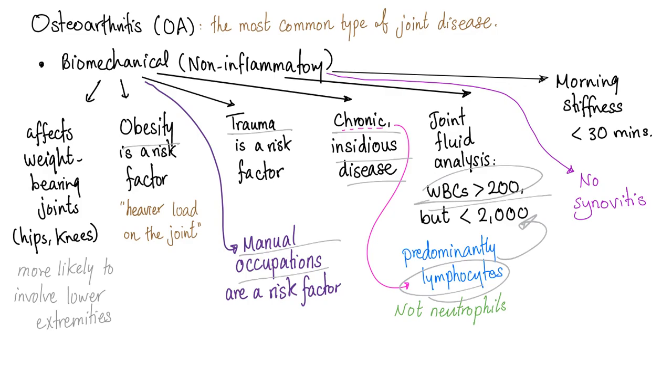The white blood cell count on joint fluid analysis is between 200 and 2,000 — not to be confused with the normal blood white blood cell count of 4,000 to 11,000, which is for the blood, not the joint.